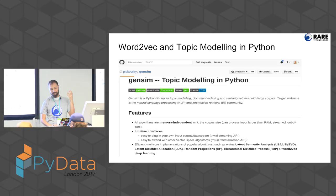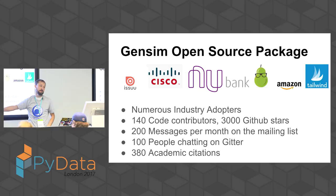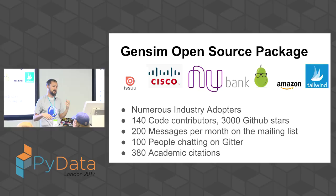So, GenSim — how many of you have used GenSim before? Good, it's a tutorial, so that's the right level to be at. GenSim is this open source topic modeling and word embedding project. We have about 500 academic citations now, and at the same time we have a lot of industry adopters — Cisco, Amazon, this kind of people use the software.